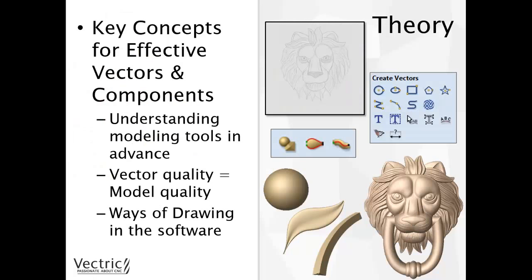Now we are going to discuss the software side of things — looking at the key concepts for effective vectors and components. We will look at the modelling tools and the sorts of shapes we can create from various vectors. We will also discuss how the quality of our vectors has a direct impact on the quality of our model. It is a good idea to have some knowledge in advance of the types of shapes you can create using the three different modelling tools available, as this will help determine the types of vectors you want to create at the start of your project.